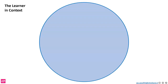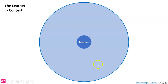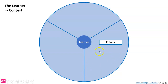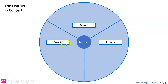So the learner in the context. Here is our learning scape, the place where learning happens. In the middle we've got the learner. I'm going to divide it here into three different elements. The first one is the private environment, the second one is the work environment, and the third one is the school environment.